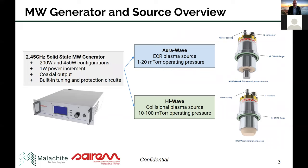Serum has developed both the generator and the plasma source side that I'm going to be talking about today. On the generator side, there's been a resurgence of microwave research with the advent of solid-state generators. In particular, Serum has a 2.45 GHz output solid-state microwave generator — there's a 200 watt, 450 watt, and now a 1 kilowatt configuration. These are really powerful research tools: they have one-watt power increment control, can output all the way down to one watt, use a coaxial output, and have built-in tuning and protecting circuits. This really simplifies the hardware compared to traditional microwave systems requiring waveguide and tuning components.